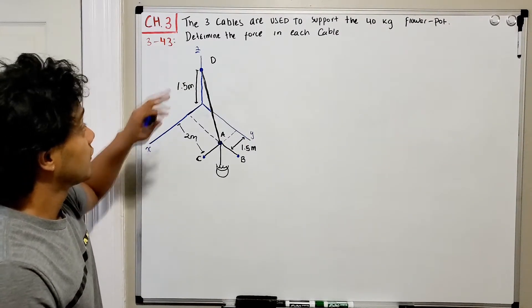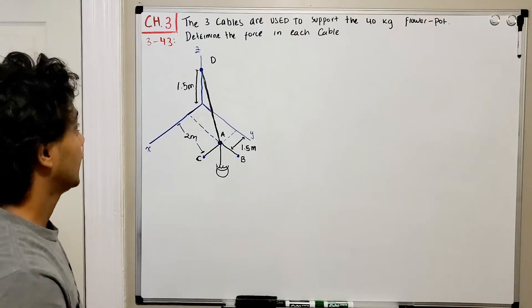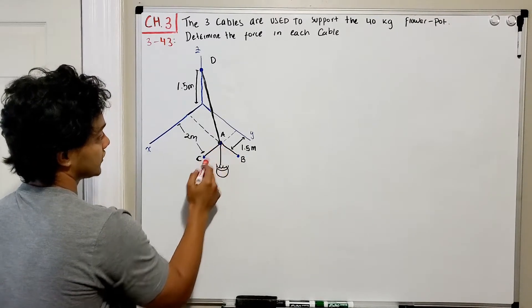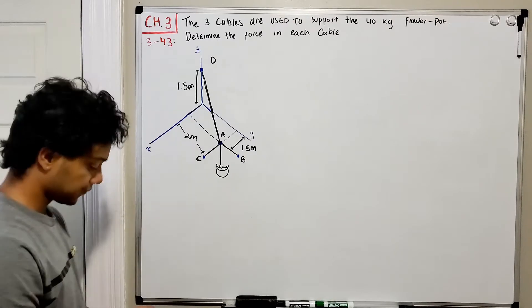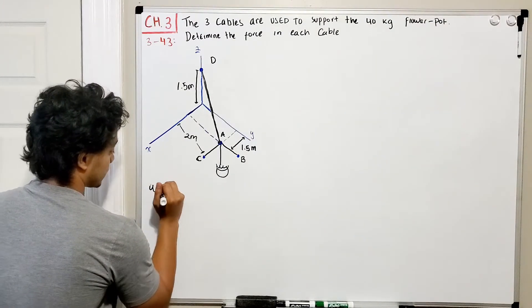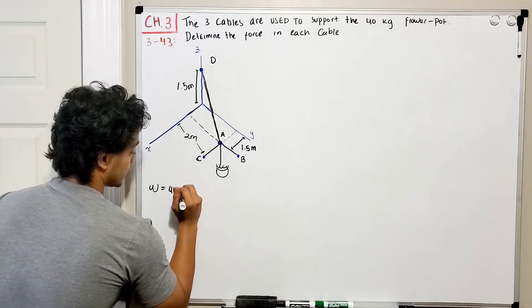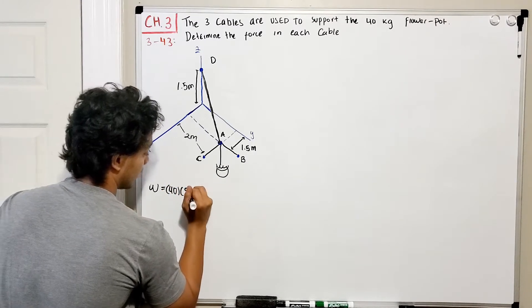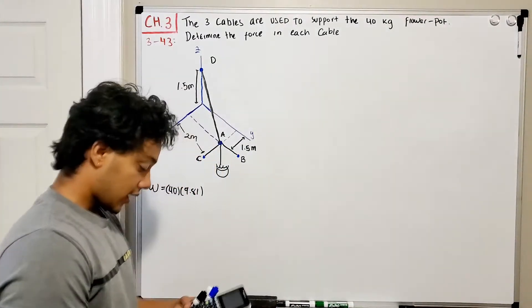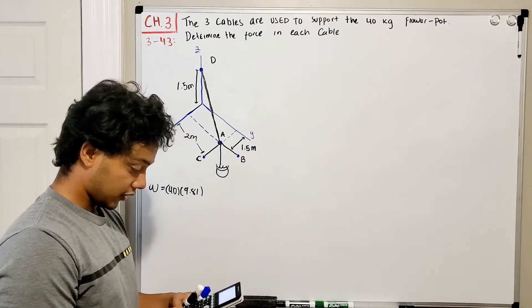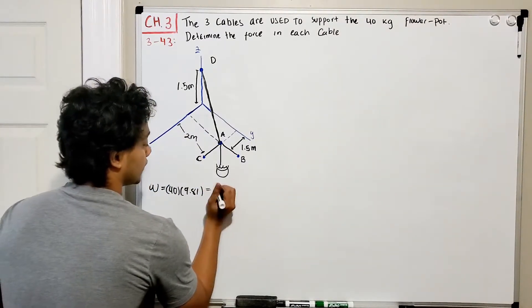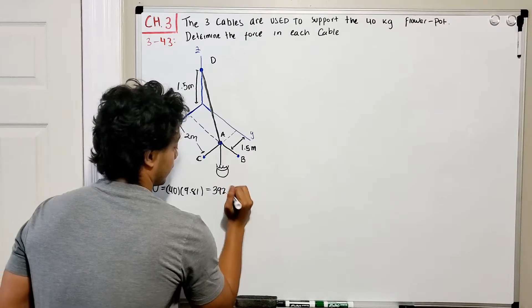It says: these three cables are used to support the 40 kilogram flower pot, and we need to determine the force in each cable — cable AB, cable AC, and cable AD — with the flower pot weight going down. Let's start by calculating the weight: 40 kilograms multiplied by 9.81 gives us 392.4 Newtons.